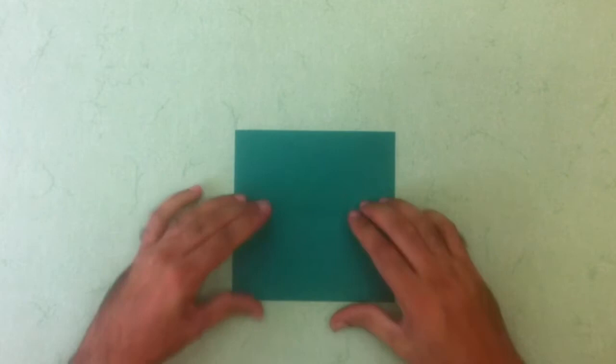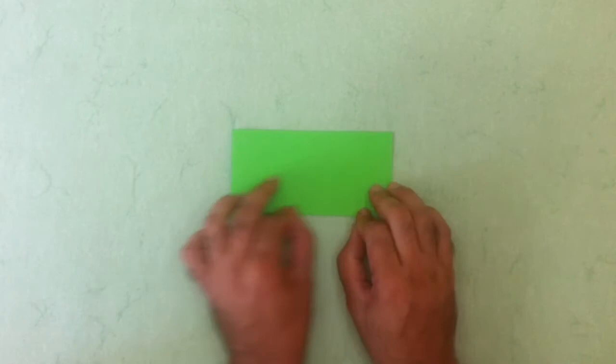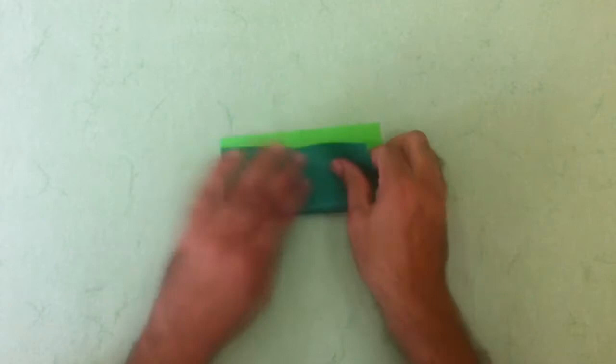So we start with the first one. We fold it by half, open it up and turn it over, rotate and do it again.